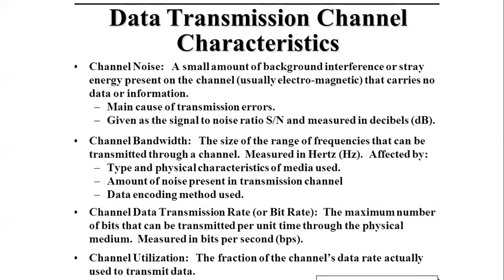Channel bandwidth: we cannot stuff a lot of data into a particular bandwidth. We need to ensure that during reconstruction, data loss is not happening. Channel data transmission rate — or bit rate — is the maximum number of bits that can transmit through this media. We don't want to stuff our bandwidth with a lot of data, so the speed and amount of data is managed by the bit rate. Channel utilization: we don't want half of our channel to be empty — the bandwidth should be utilized efficiently so that data passes through without loss.